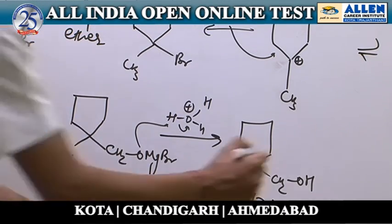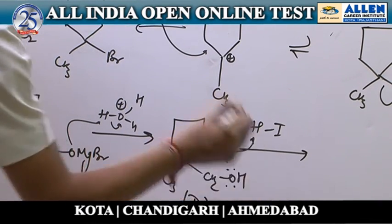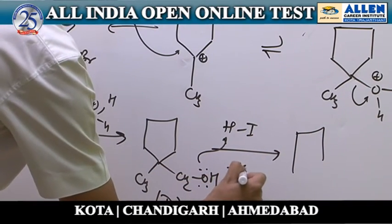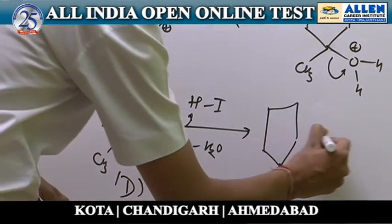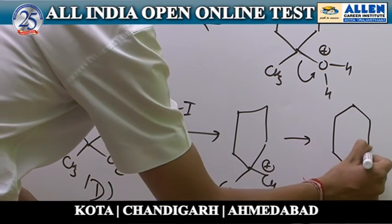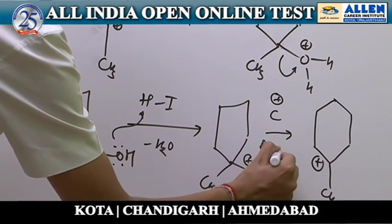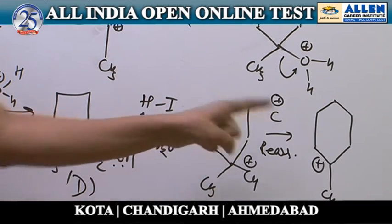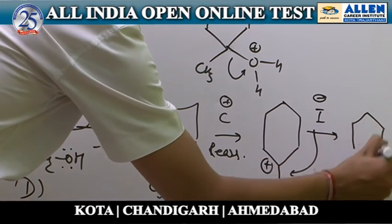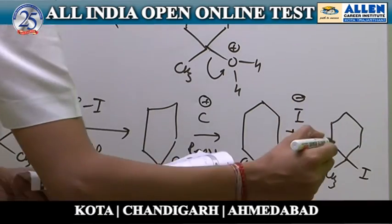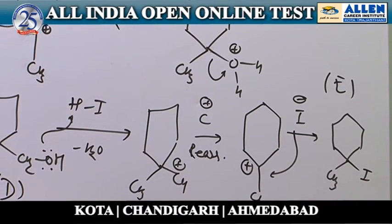Compound D is reacted with HI. This starts with protonation of the alcohol and elimination of water, forming a carbocation. Carbocation rearrangement takes place: the 5-membered ring carbocation is converted into a more stable 6-membered ring carbocation. Then iodide ion (I⁻) attacks as nucleophile to give product E. The correct answer is the fourth option.